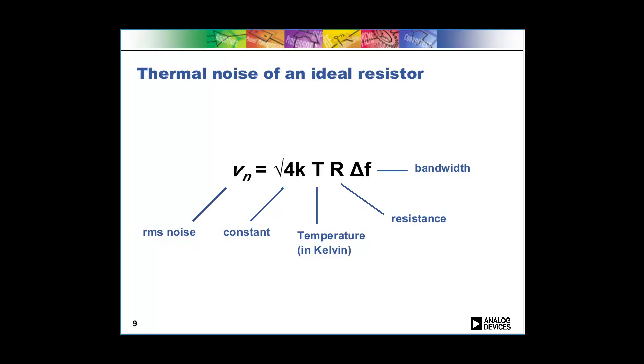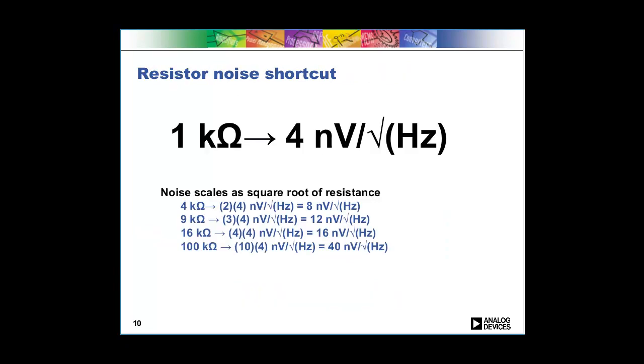Now, you don't really need to memorize this equation. It's nice to know the relations, to understand what's in the equation, but you don't actually have to memorize the exact form because there's a nice little shortcut that's pretty handy. And that is that a 1 kiloohm resistor has 4 nanovolts per root hertz noise. And this is something that I recommend memorizing because if you're doing low noise design, this will come in handy again and again.